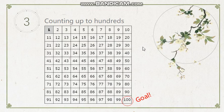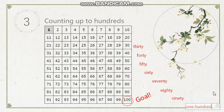Let's do the spelling first. Thirty: T-H-I-R-T-Y. Forty: F-O-R-T-Y. Fifty: F-I-F-T-Y. Sixty: S-I-X-T-Y. Seventy: S-E-V-E-N-T-Y. Eighty: E-I-G-H-T-Y. And ninety: N-I-N-E-T-Y. And the last one, one hundred: H-U-N-D-R-E-D. One hundred. Yay!